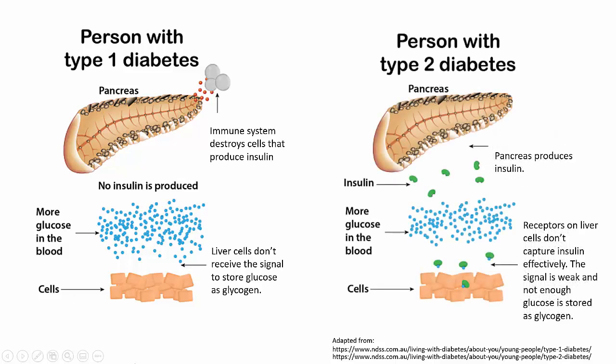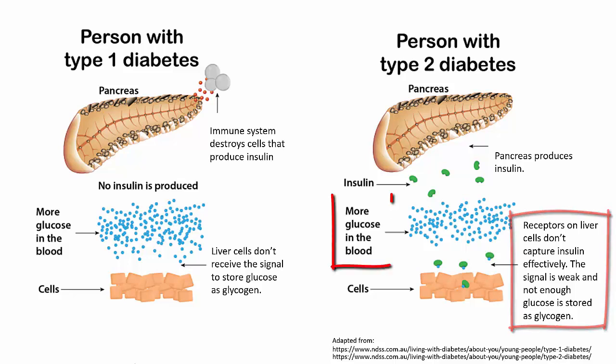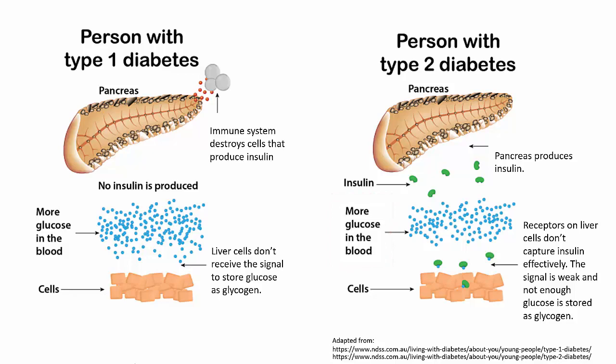Type 2 diabetes is more common than type 1. In this case, the pancreas is able to make insulin, but the receptors on the liver cells do not capture it very well. That means that the liver doesn't respond appropriately to maintain blood sugar levels. Type 2 diabetes tends to develop later in life and can often be managed by careful diet and exercise.